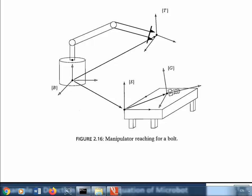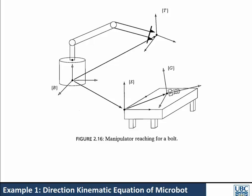In this lecture we'll learn about forward kinematics. A scenario has been given where there is an industrial robot trying to reach a bolt. The bolt has been assigned frame G — G for gold — and the table has been assigned a static frame, because it is assigned to the table which will remain static throughout.